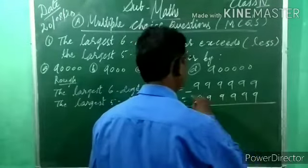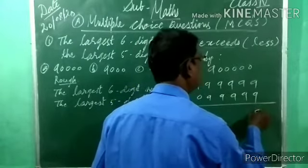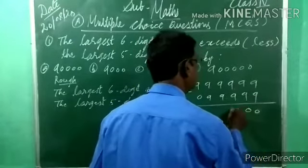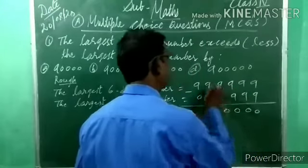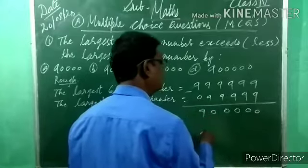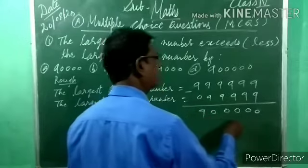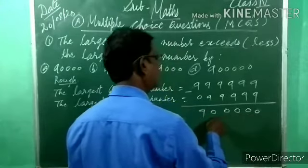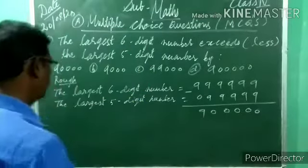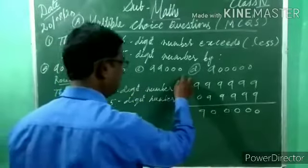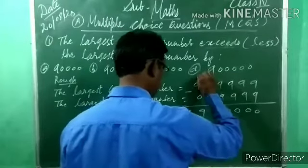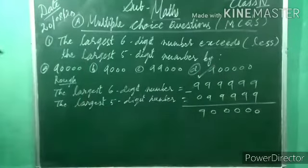Now nine minus nine is zero, here also nine minus nine zero, here zero, here zero — nine minus zero is nine. The answer is nine lakh (9,00,000). So the correct option is D — nine lakh. Understood?